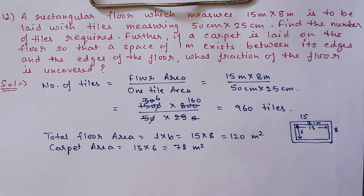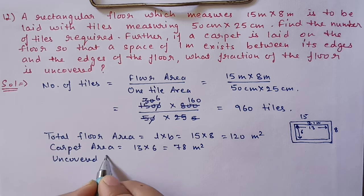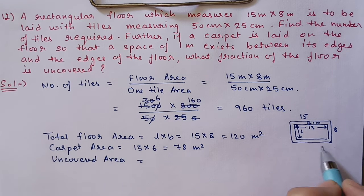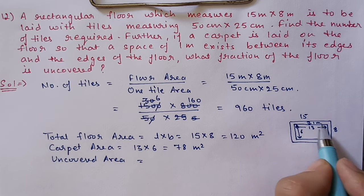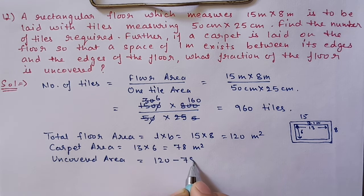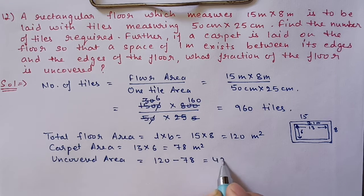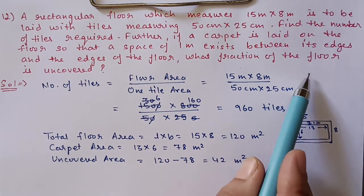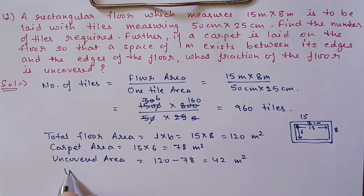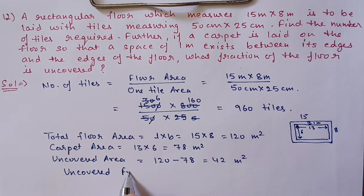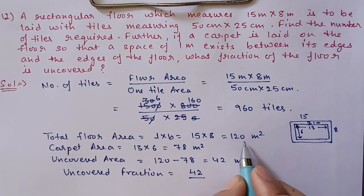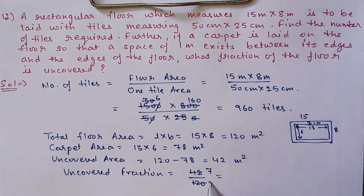The uncovered area equals total area minus carpet area: 120 minus 78 equals 42 square meters. We have to find the fraction of the floor that is uncovered. Therefore, uncovered fraction is 42 out of 120. Simplifying by dividing by 6, we get 7 by 20 as the answer.